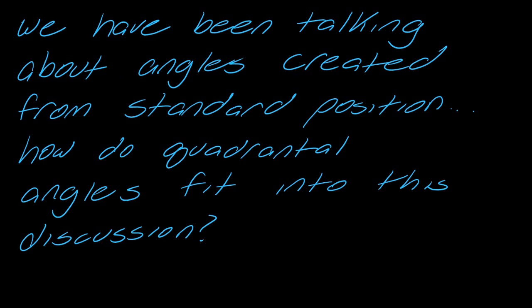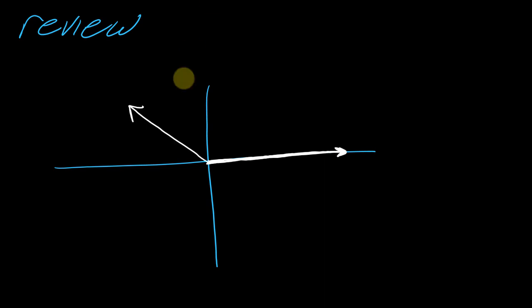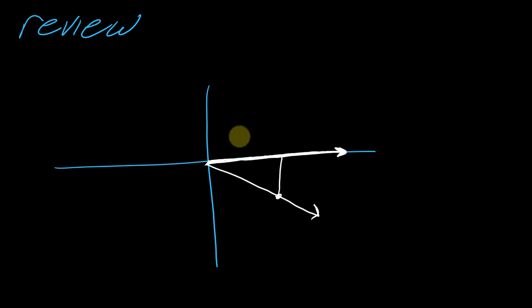We've been talking about angles created from standard position, but how do quadrantal angles fit into this discussion? What we've talked about so far is a situation where your terminal side is somewhere over here — you select a point on that terminal side, create a right triangle, and find values of trig functions. The terminal side can be in any quadrant, and you keep in mind the point you're using and whether it's positive or negative to fill in the sides. This is something we should all be familiar with from previous videos.